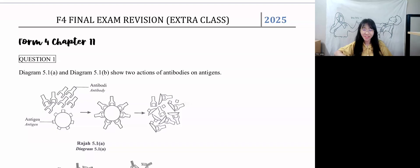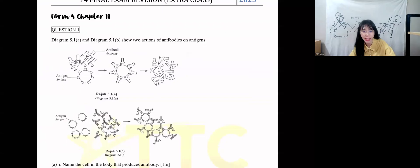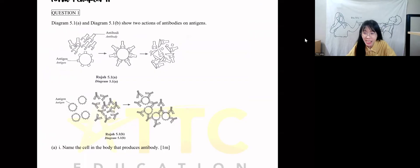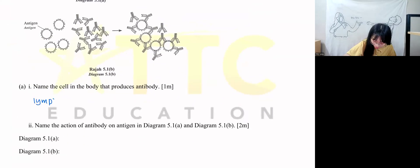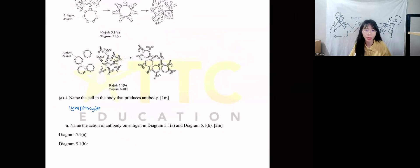Okay, Chapter 11. Figures 5.1a and 5.1b show two actions of antibodies on antigens. Name the cell in the body that produces antibodies. The cell that produces antibodies is the strongest white blood cell, and it is called lymphocytes. Lymphocytes are the ones that produce antibodies.